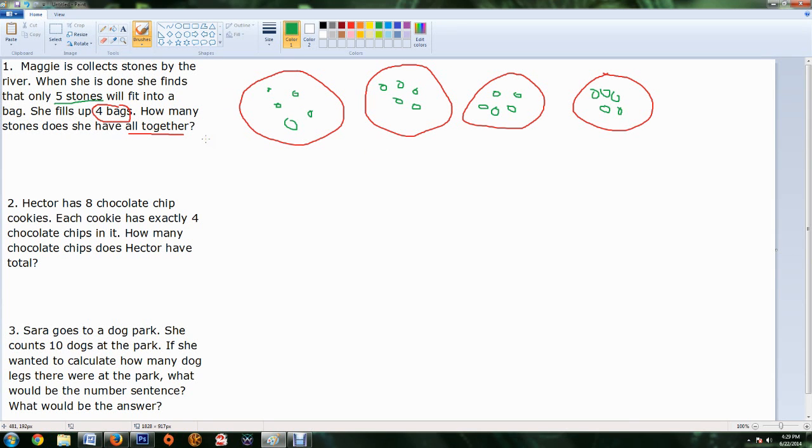So how many stones does she have all together? Well, there's a couple ways we can write this. This can be an addition number sentence. So we know we have five stones in this bag, five stones in this bag, five in this one, and five in this one. And if we know all together, that means we are going to add them up. Five plus five is ten, plus five is fifteen, plus five is twenty. Another way we could do that is we could skip count. Five, ten, fifteen, twenty. We know that. Now, we can also see that each one of these numbers is the same. This is repeated addition. And what do we know about repeated addition? We know that it's the same as multiplication.